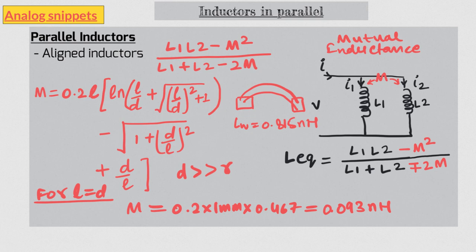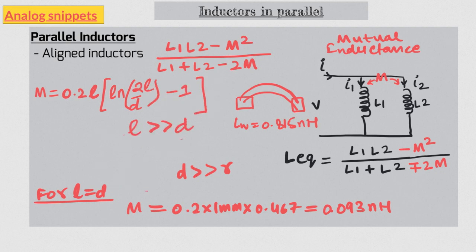By the way, if wires are closely placed — that is, if l is much greater than d — this mutual inductance equation reduces to a much simplified form. You can ignore the 1 from one term and d/l from two other terms. The result is an equation very similar to the partial self-inductance of a wire, except r is replaced by d.